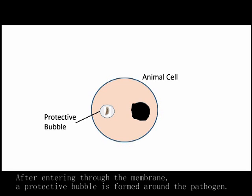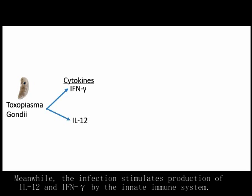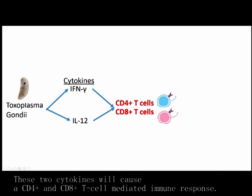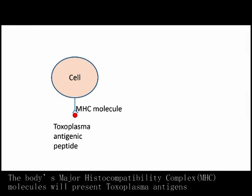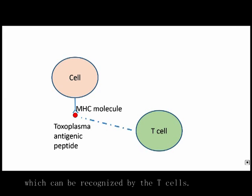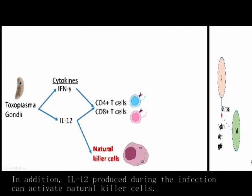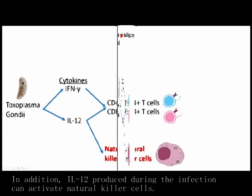After entering through the membrane, a protective bubble is formed around the pathogen. Meanwhile, the infection stimulates production of IL-12 and IFN-gamma by the innate immune system. These two cytokines will cause a CD4+ and CD8+ T cell-mediated immune response. The body's MHC molecules will present Toxoplasma antigens, which can be recognized by the T cells. In addition, IL-12 produced during the infection can activate natural killer cells.